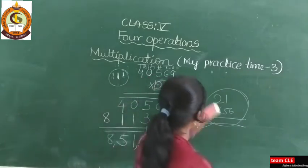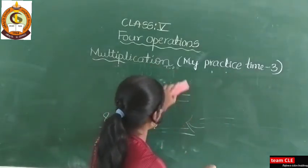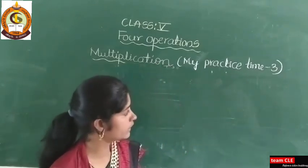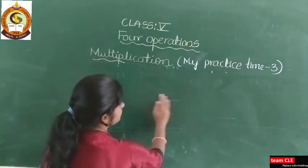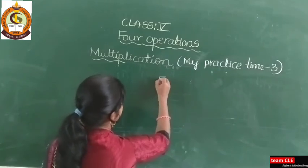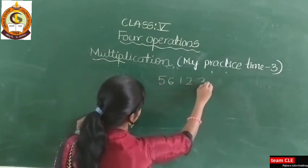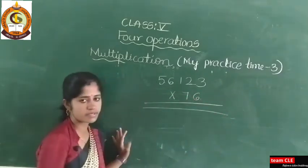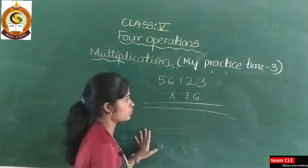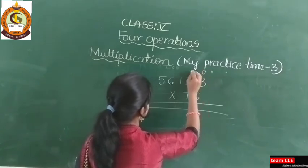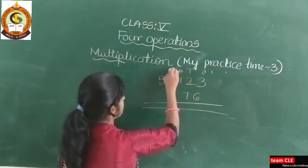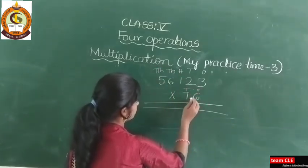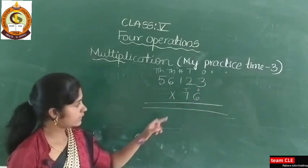Next I will take one more example from My Practice Time 3. Let us take 56,123 into 76. Here you need to know the 6 times table and the 7 times table. Write the place values: ones, tens, hundreds, thousands, ten thousands. First multiply with ones, then tens — meaning first time with 6, next time with 7.